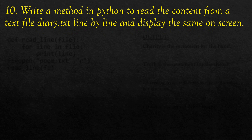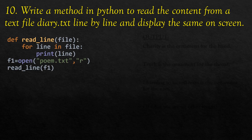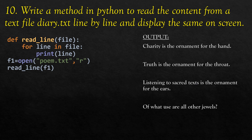Question 10 asks us to write a method in Python to read the content from a text file diary.txt line by line and display it on the screen. We define a method called read_line that takes a file object as its parameter. Within the method, it reads the file line by line and prints each line. Here, an existing file poem.txt is used instead of diary.txt, opened in read mode, and the method is called by passing the file object.